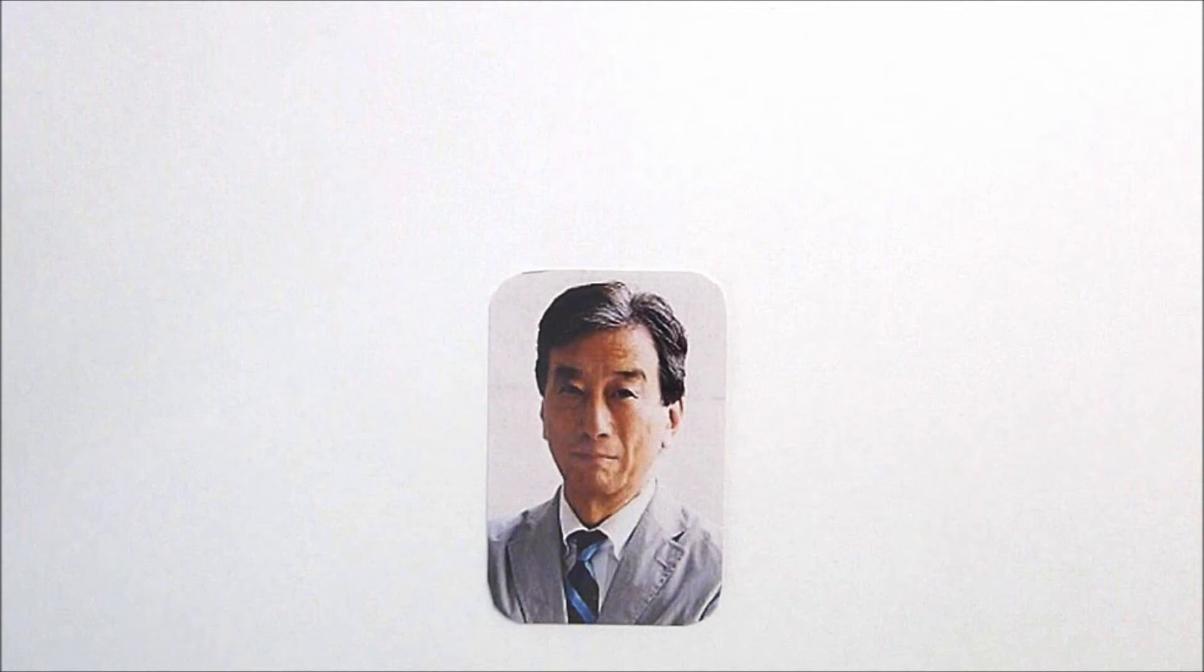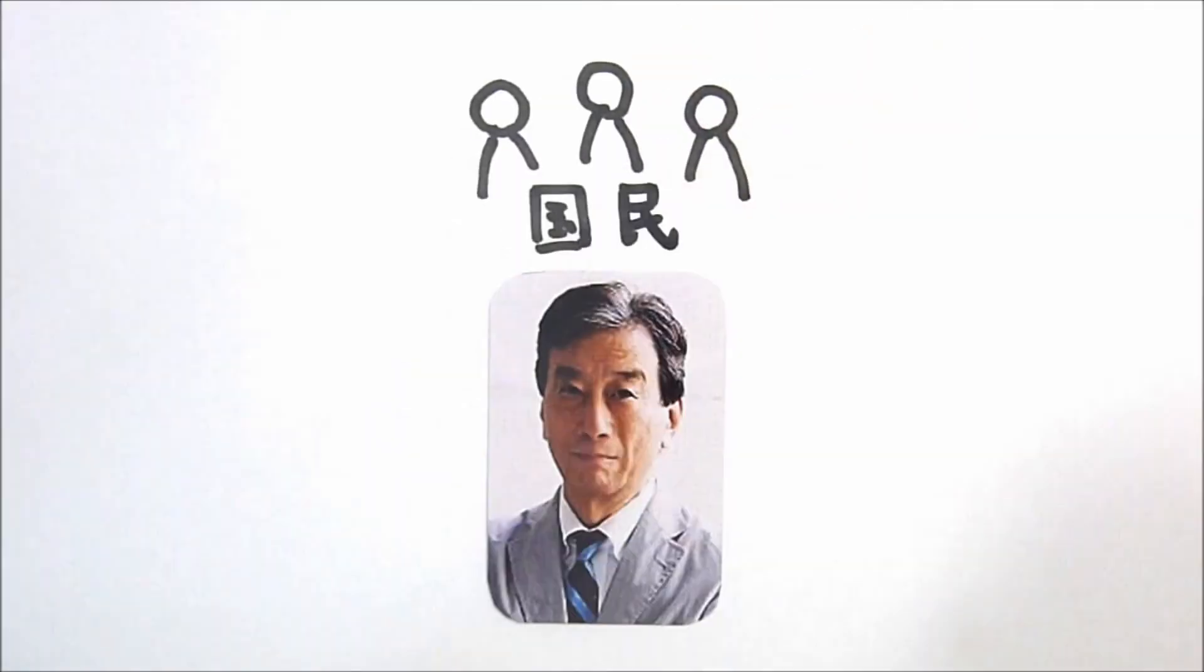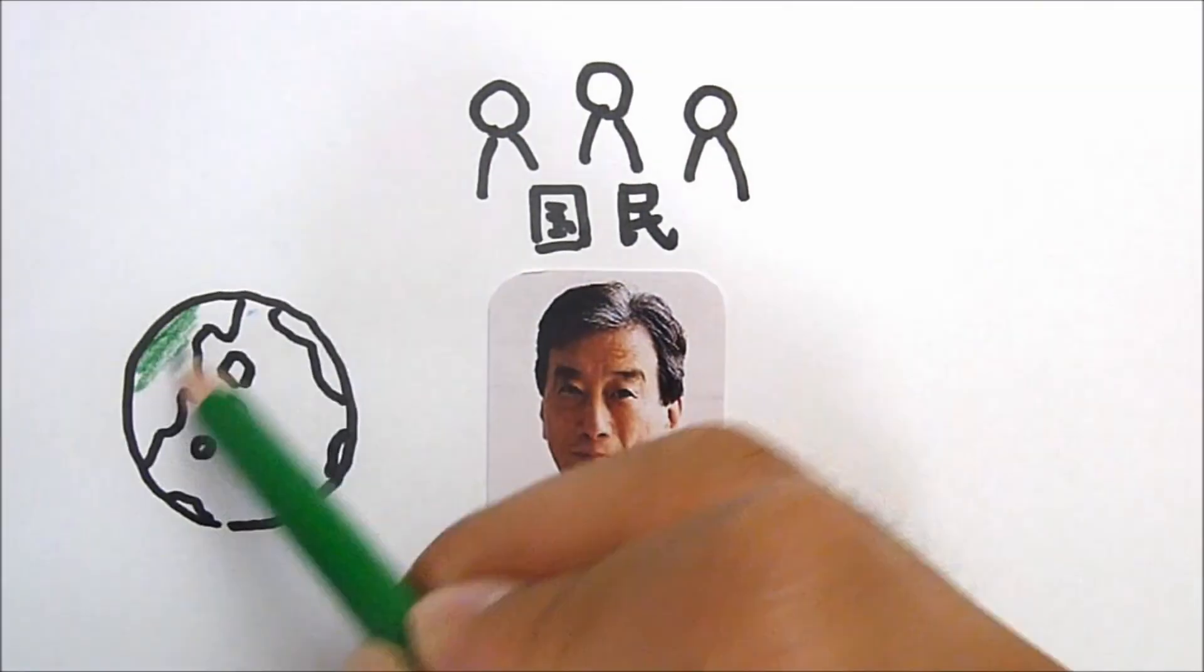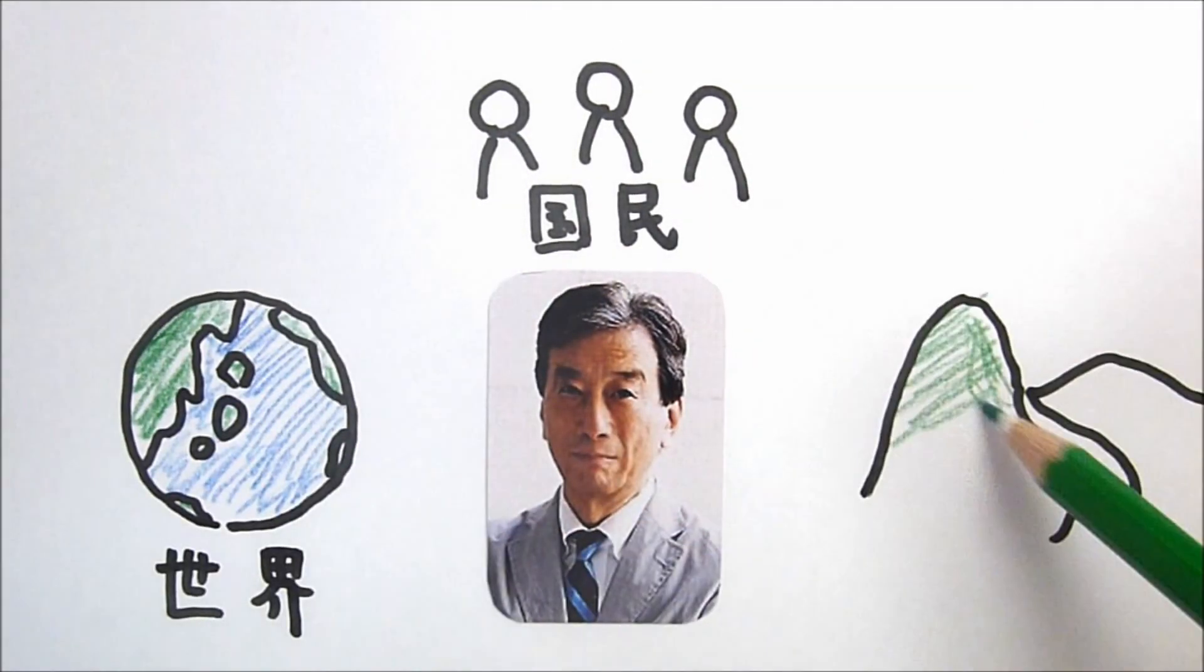Chairman Kiyoshi Kurokawa defined three principles for the investigation. One, to adopt the people's point of view. Two, to share the findings with all other countries. And three, to submit recommendations for the future.